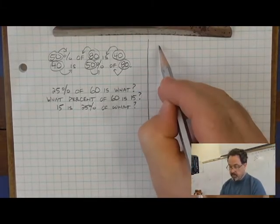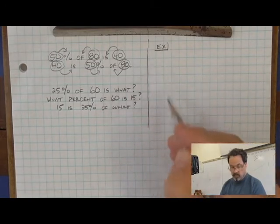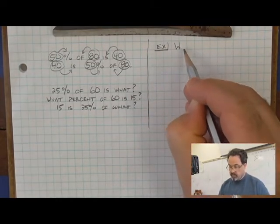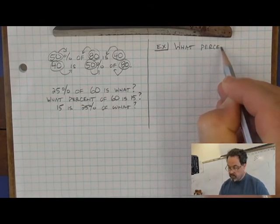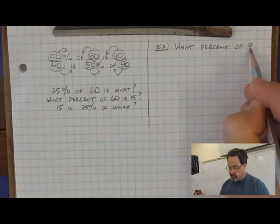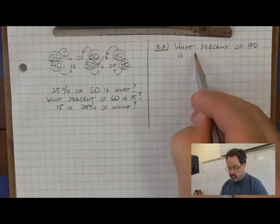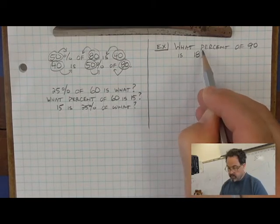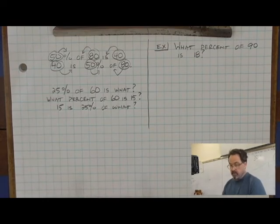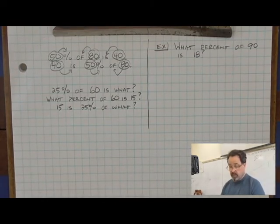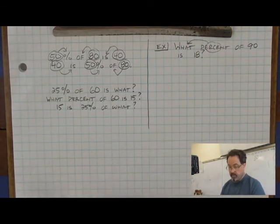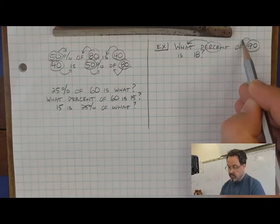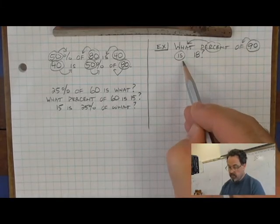Let's do that with an example. In this example, we will ask, what percent of 90 is 18? This problem has a percent, an of quantity, and an is quantity. The percent quantity is what's unknown. The of quantity is 90, and the is quantity is 18.